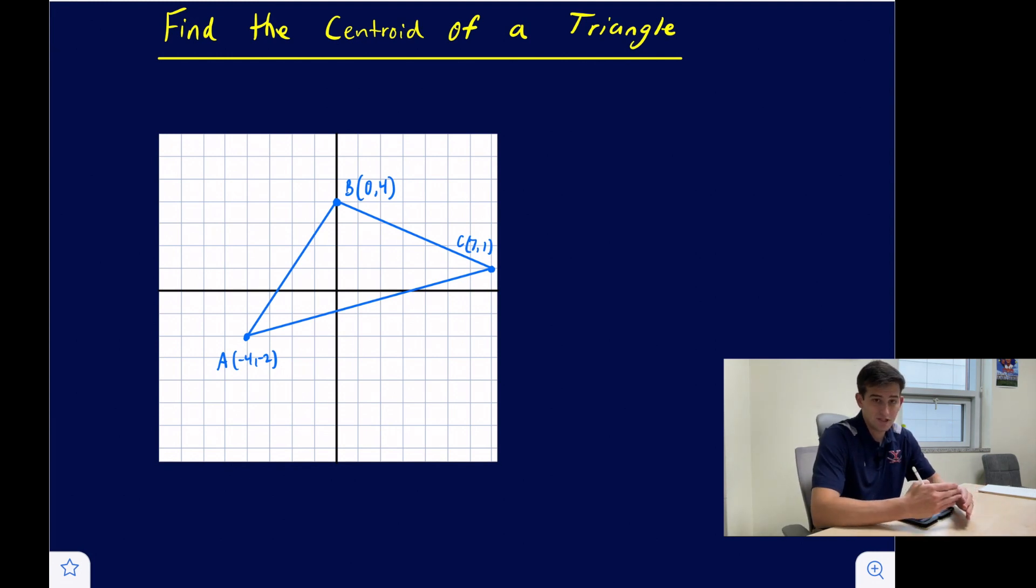The centroid is formed at the intersection of the three medians of a triangle, and the median of a triangle is a segment that is drawn from the vertex to the opposite side and to that side's midpoint.